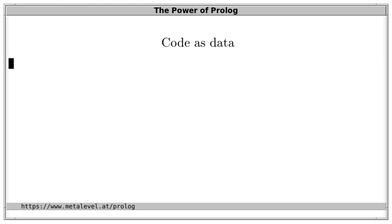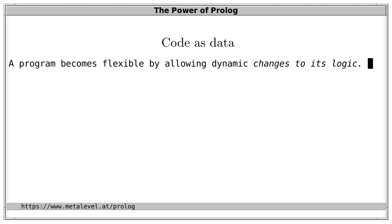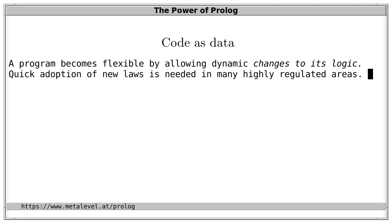Such examples are very interesting because a program becomes truly flexible by allowing dynamic changes to its logic. In many highly regulated areas, it's not enough to simply write a program once because new laws and regulations must be constantly adopted. You must write programs such that you can easily incorporate new rules and regulations, ideally dynamically — without recompiling and newly deploying the program, but on the fly. This is needed, for example, in banks, insurance companies, and many government IT services.